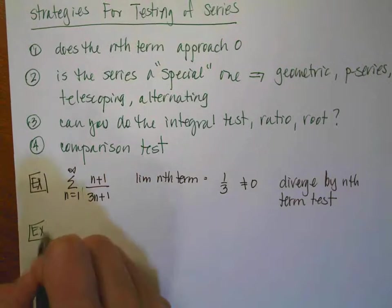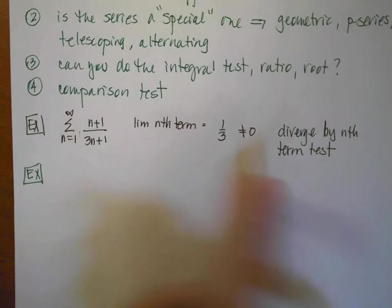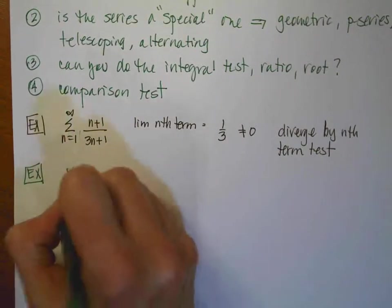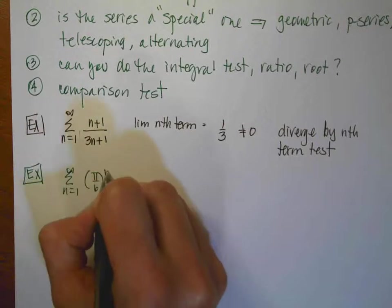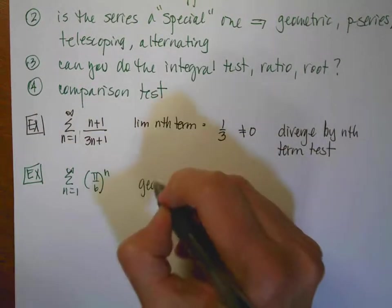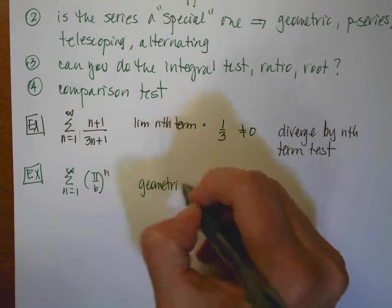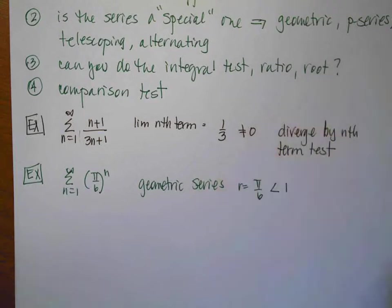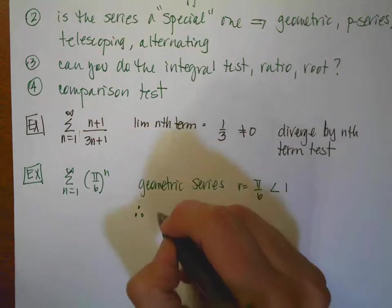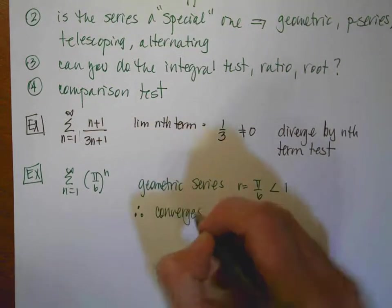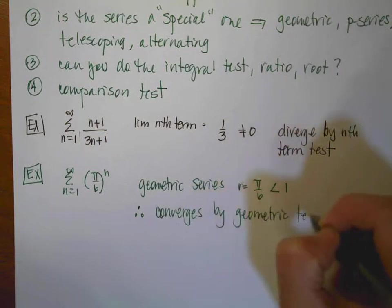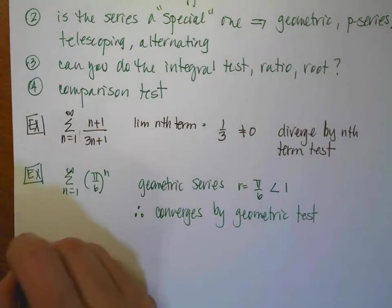The next example: I have the sum from n equals 1 to infinity of pi over 6 raised to the nth. Well, this is just a geometric series, and in this one r is equal to pi divided by 6, which is less than 1. And because it's a geometric series, then we can say that it converges by the geometric test.